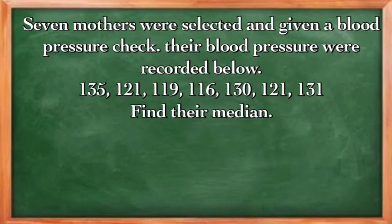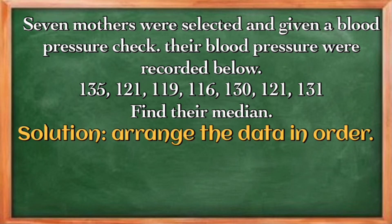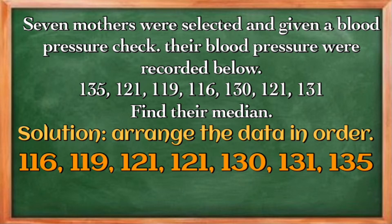Now let us have this example. Seven mothers were selected and given a blood pressure check. Their blood pressures were recorded below. What we're going to do is to find their median. First thing that we need to do is to arrange or order this data set. We have 116, 119, 121, 121, 130, 131, and 135. In this example, we have seven data values, and this is an odd number of values.